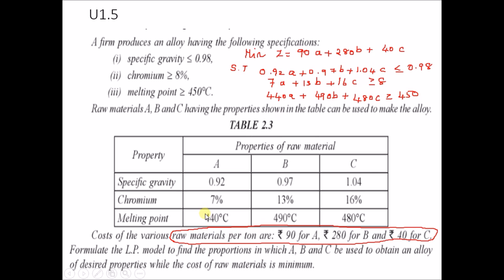This problem is again a very confusing one. Many students will write something like 0.92x1 plus 7x2 plus 440x3, because they think A, B, C are the products with those properties. But when you carefully read the problem, the cost for various raw materials is given as 90, 280 and 40.